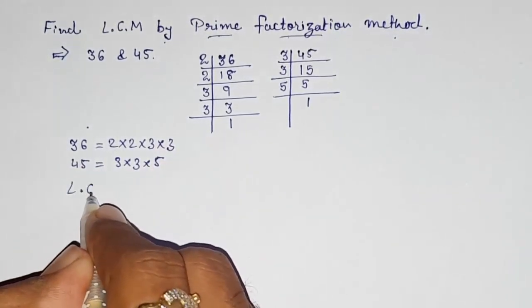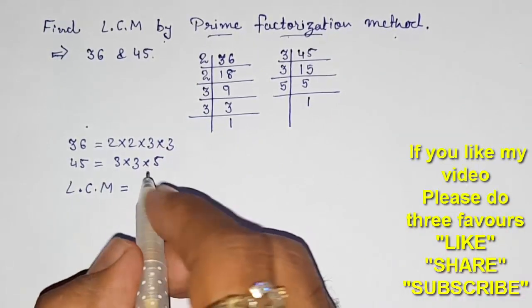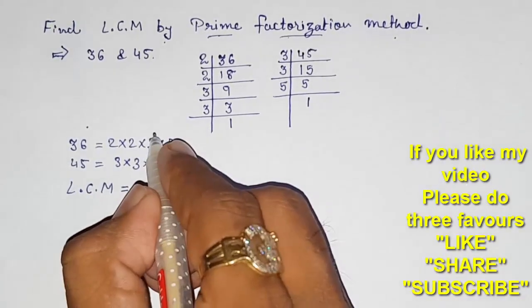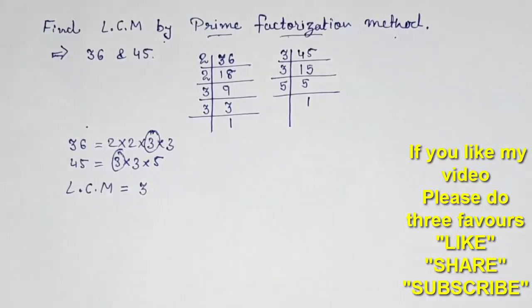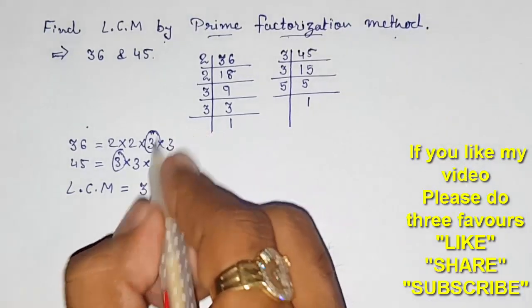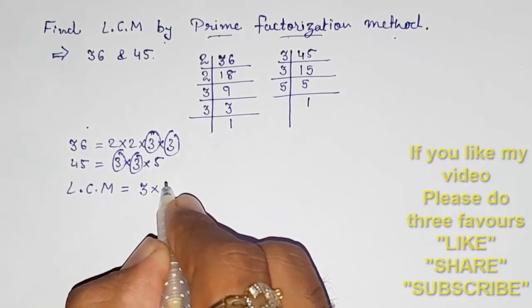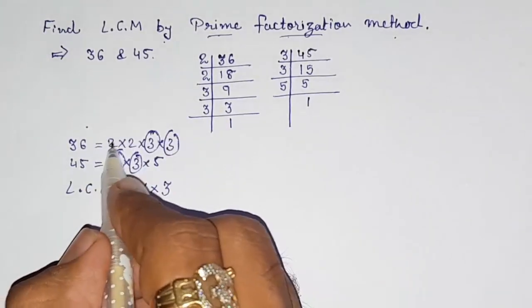LCM means the lowest common multiple. So first we have to find out the common numbers between these two factors. Look here, this 3 and this 3, so this one is common. Now again, anything common in between this? Yes, these two are also common, so again one 3. Now the remaining numbers which are not common...